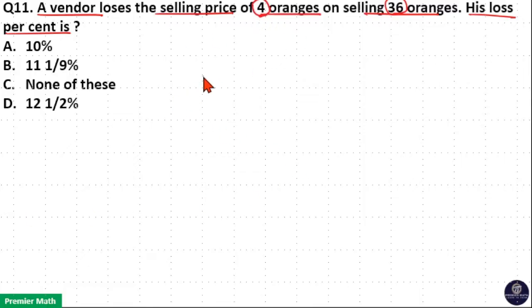Which means total cost price here is equal to cost price of 36 oranges, which is equal to total selling price plus total loss, which is 36 plus 4. That is selling price of 40 oranges.